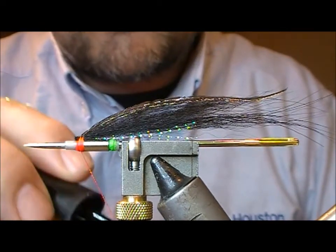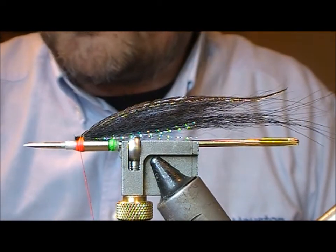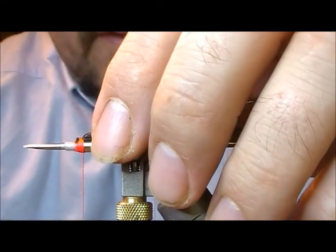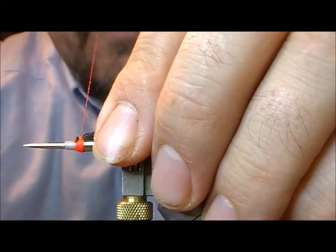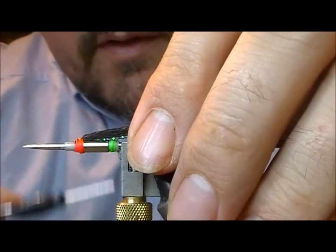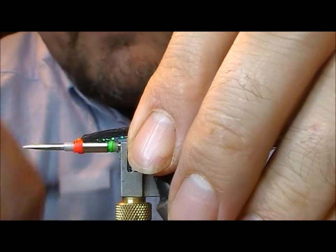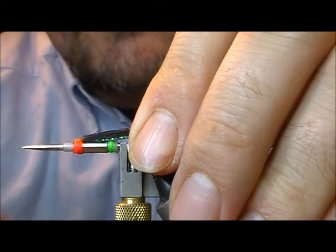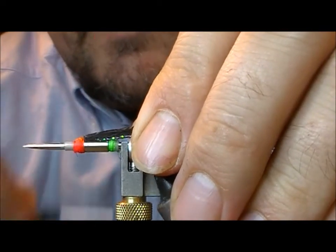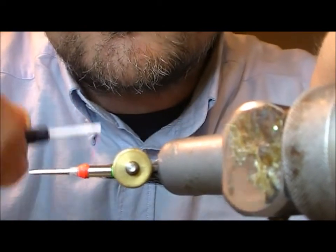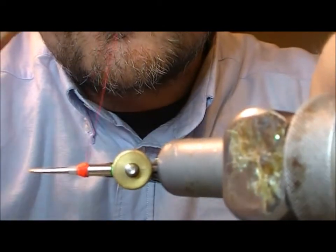To finish off, we'll run the superglue on the thread and make a nice head. Just make sure that we cover up any of the material that was showing through.